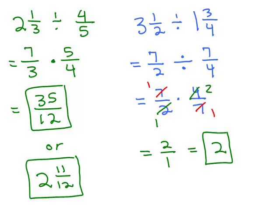So that's how you do division with fractions. First make sure the numbers are improper fractions, then rewrite the division as multiplying by the reciprocal, and then just use your rules for multiplication and canceling.